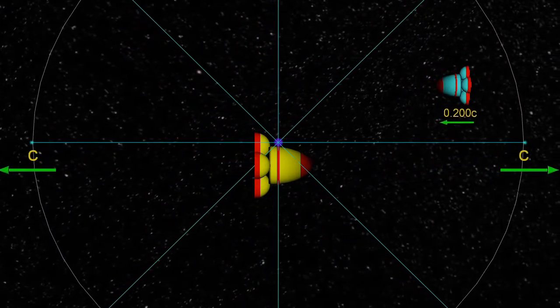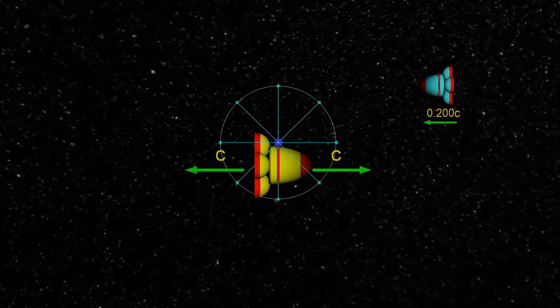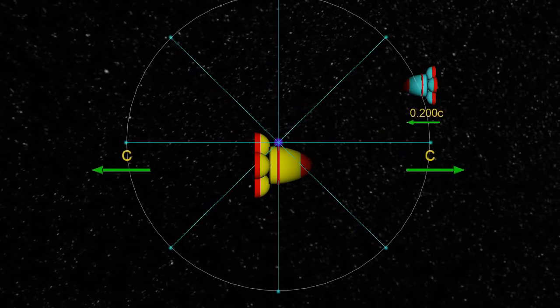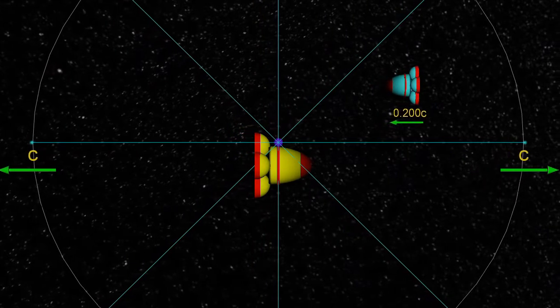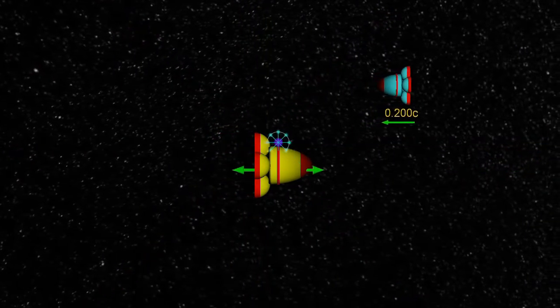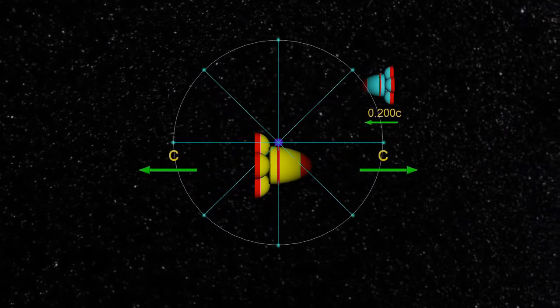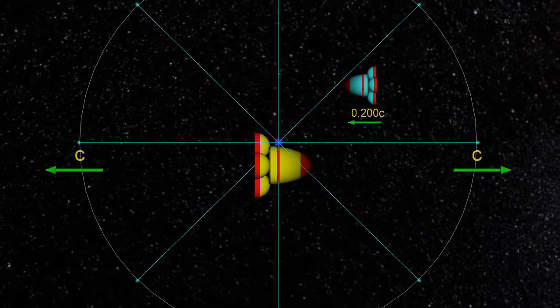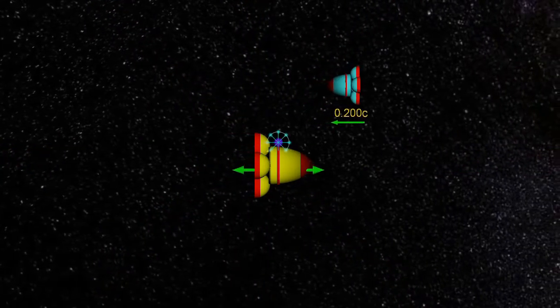So we don't agree on the speed of the yellow spacecraft. We say it's stationary, whereas the people on board the blue spacecraft say that it's moving at 0.2c. However, when it comes to the photons leaving the light bulb, we both agree that the photons are traveling at c. All observers measure the speed of light as c.